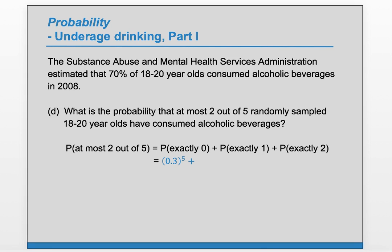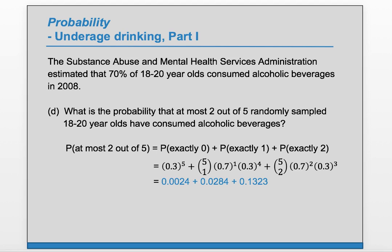For exactly 0, that's simply 0.3 to the 5th. For exactly 1, that's 5 choose 1, times 0.7 to the 1, times 0.3 to the 4. For exactly 2, we have 5 choose 2, times 0.7 to the 2, times 0.3 to the 3. We evaluate these individually and add them up to get 0.1631.